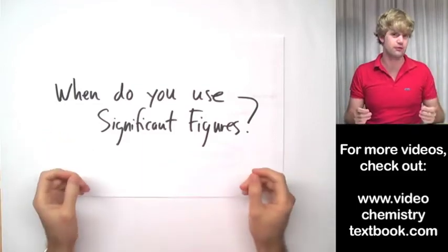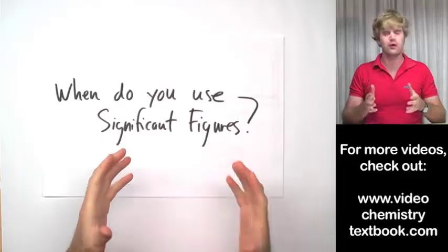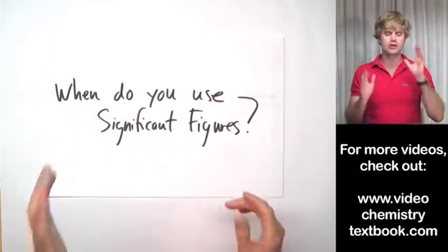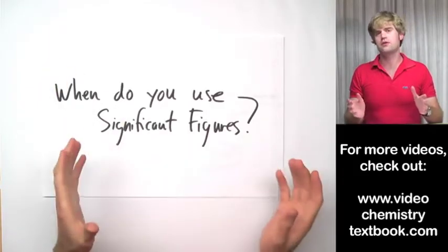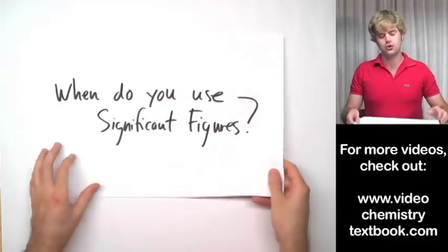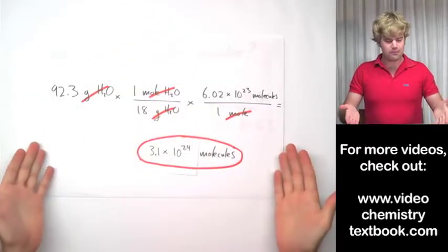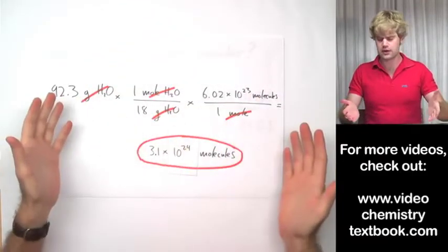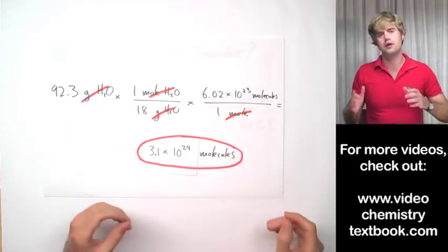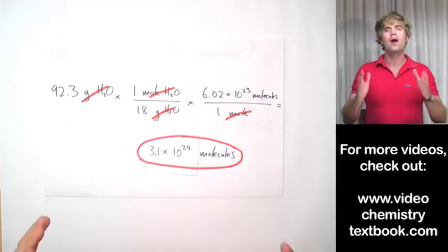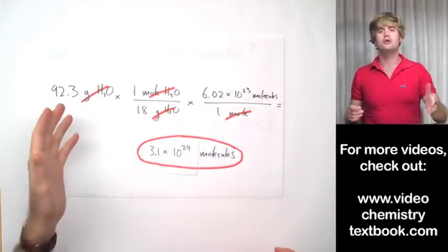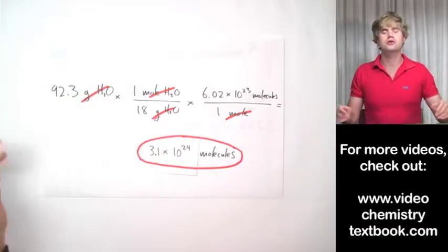So when do you actually use significant figures? You've learned how to multiply and divide them, when a zero is significant or not, addition and subtraction — all that. But the point of significant figures isn't just to memorize rules. The point is to help us do scientific math problems where we have all sorts of units and want to find the final answer. For the next few units, we're going to find out when we actually use significant figures in the kinds of math problems we'll do in physics, chemistry, or whatever science we're working on.